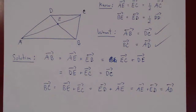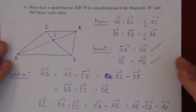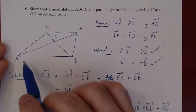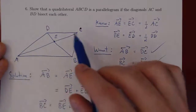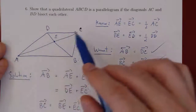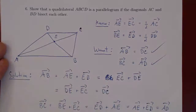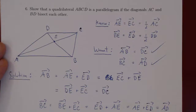A natural question is: what if we switch the assumption and the conclusion? Here we've proved that if we have an arbitrary quadrilateral where the diagonals bisect each other, the quadrilateral must automatically be a parallelogram. Our next video will prove that the opposite holds as well — if you have a parallelogram, then automatically the diagonals must bisect each other.